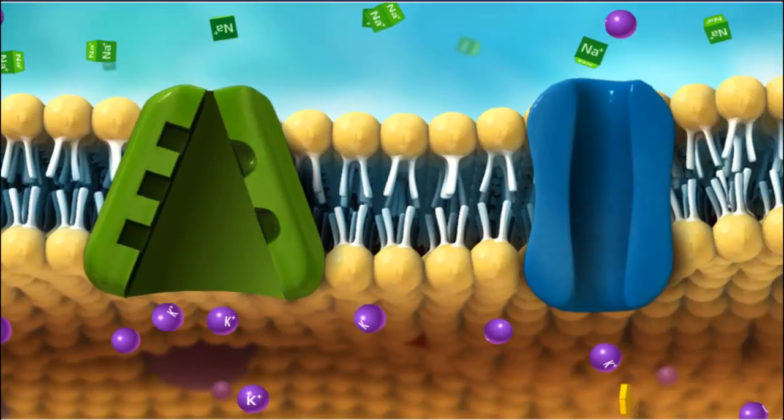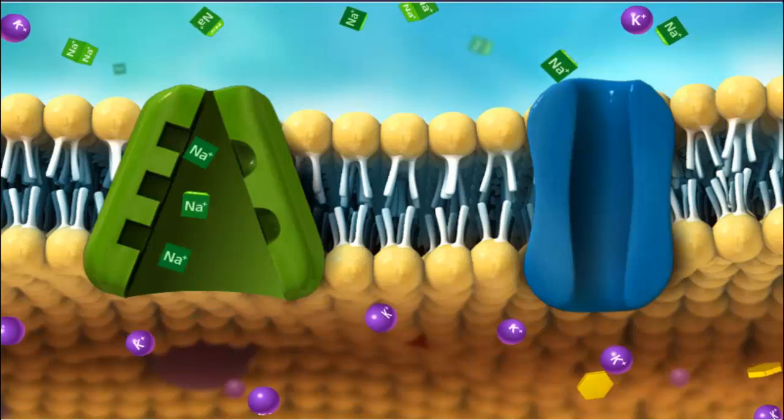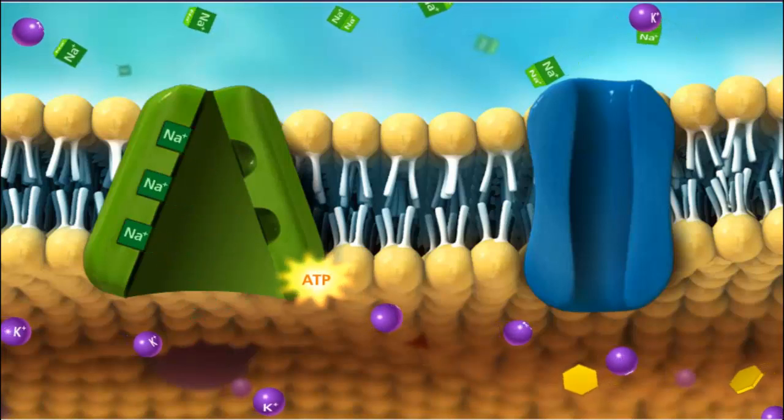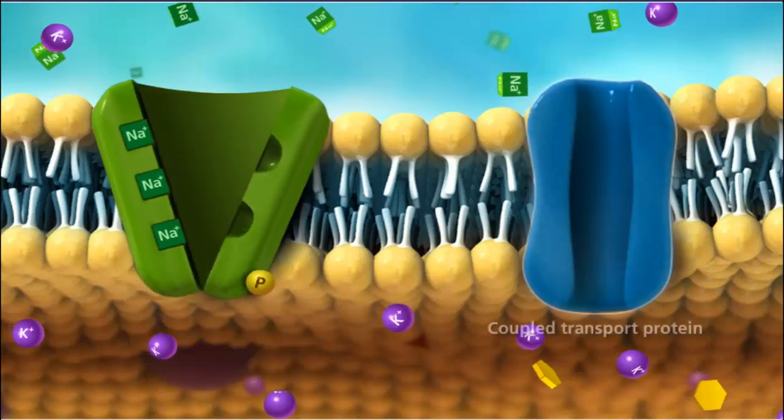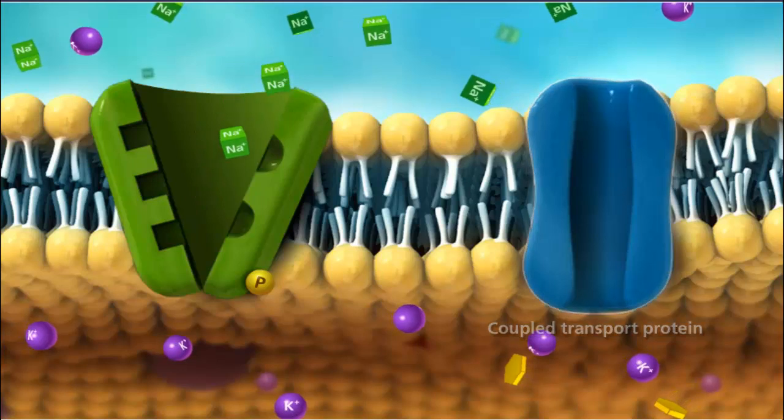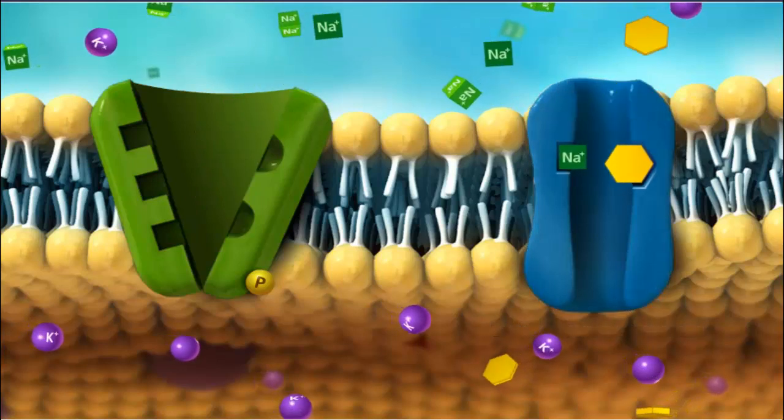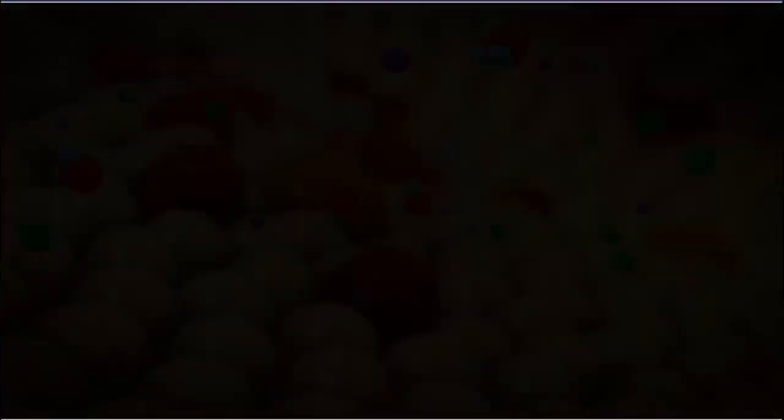In other instances of active transport, the concentration gradient created from the action of one pump can be used as the input of energy to drive a different pump, a process known as coupled transport. The large concentration gradient of sodium ions is used to bring glucose into the cell against its concentration gradient.